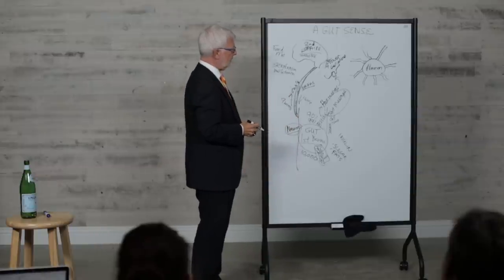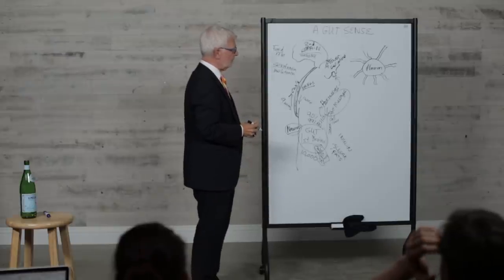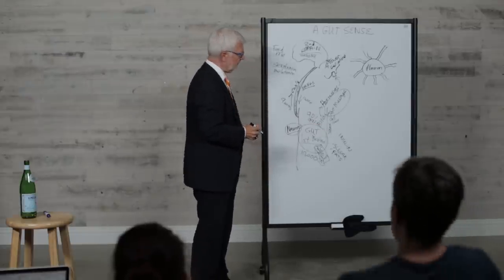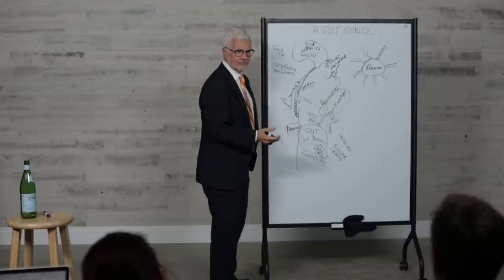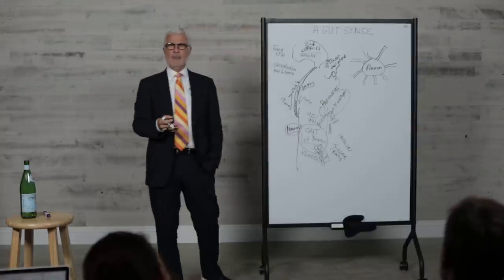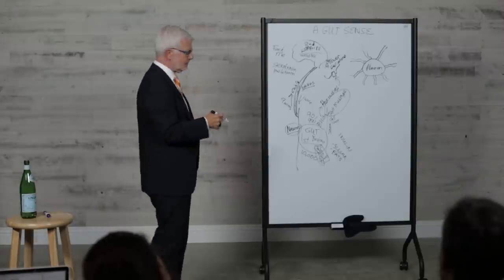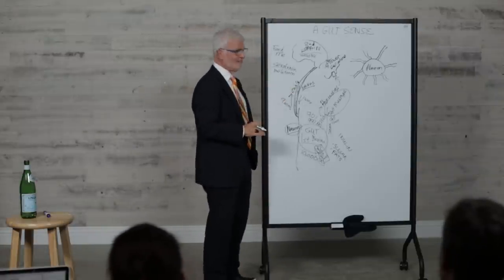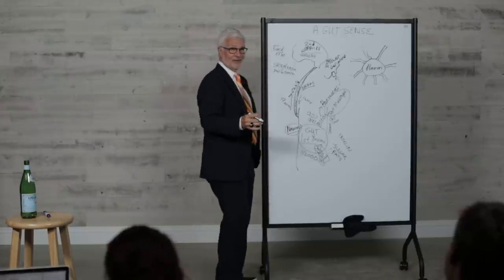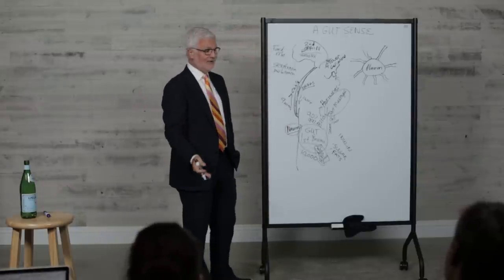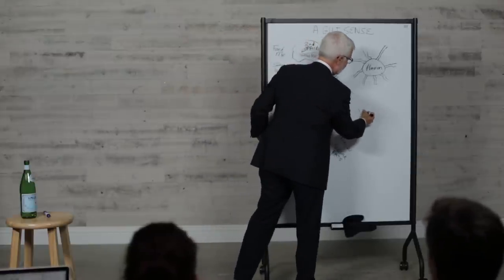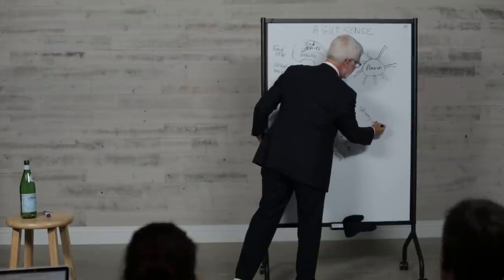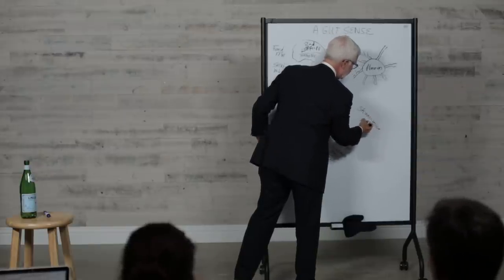There's been some beautiful experiments with germ-free mice. They've taken germ-free mice who don't have any bugs in their gut and given them feces from fat rats. Now the nice thing about working with rats and mice is they love to eat each other's feces. You don't have to give them enemas. They take skinny mice and give them feces from obese mice, and lo and behold, the skinny mice become obese.